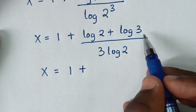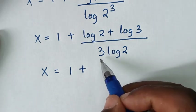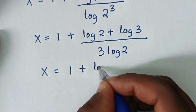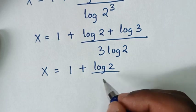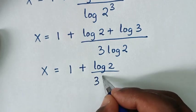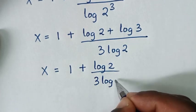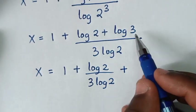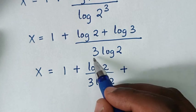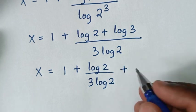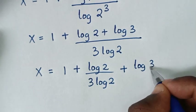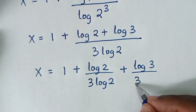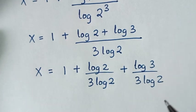So in this part and in this part, it will be log of 2 over 3 log of 2, then plus log of 3 over 3 log of 2.